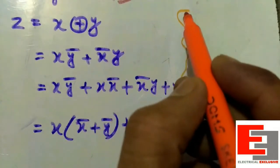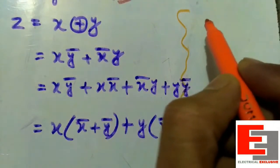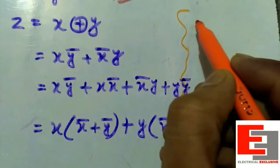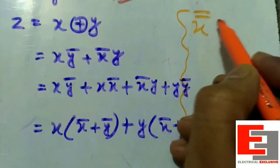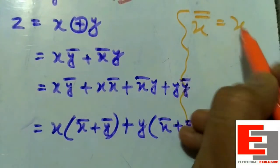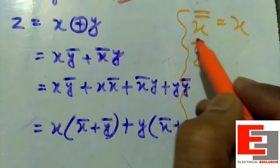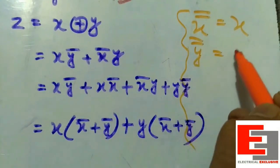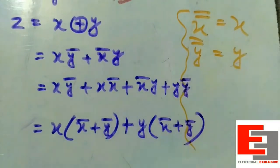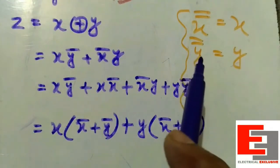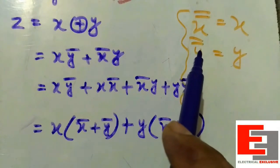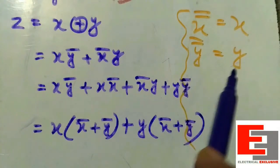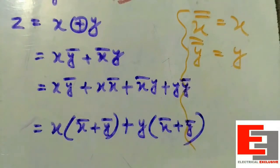Now I would like to reveal one more essential Boolean formula: X double bar is equal to X, or Y double bar is equal to Y. That means when we apply double complement to a signal, that signal remains unchanged. I shall apply it on this expression.